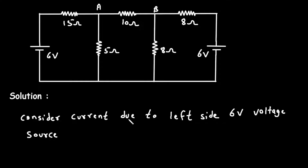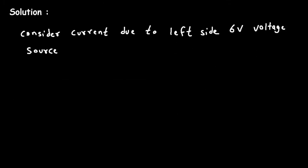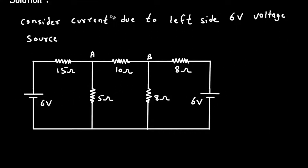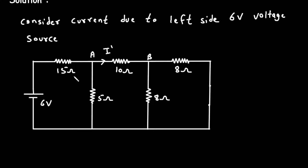Consider the current due to the left side 6V voltage source. Since we are considering the left 6V source, we will turn off the right 6V source. When we turn off a voltage source, it is replaced by a short circuit. We have to find this current — let's call it I prime — and according to the polarity of the voltage source, this will be the direction of I prime.